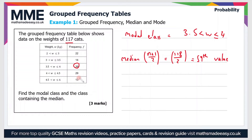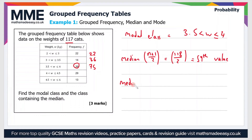Now we have to find the weight class that contains the 59th value. To do that, let's total up the frequency column row by row. We've got 22, and then if we add 14, we get to 36. If we add the next row — 39 — that takes us to 75. So the 3.5 to 4 weight class contains everything from the 37th to the 75th value, which obviously includes the 59th value. Therefore, the median weight class is 3.5 to 4 kilograms.